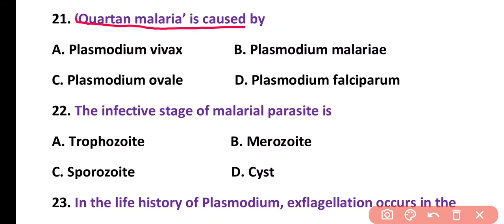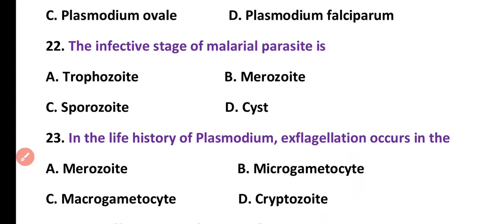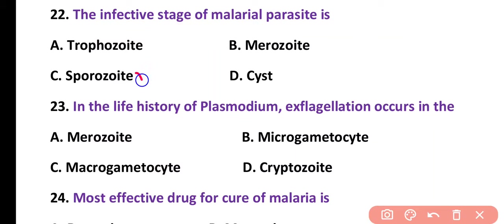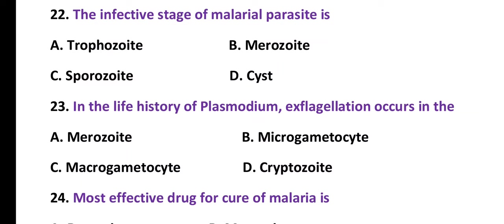Question number 21. Quartan malaria is caused by: Plasmodium vivax, Plasmodium malariae, Plasmodium ovale, or Plasmodium falciparum. Correct answer is option B. Plasmodium malariae causes the quartan type of malaria. Question number 22. The infective stage of the malarial parasite is: trophozoite, merozoite, sporozoite, or cyst stage. Correct answer is option C. The infective stage is the sporozoite, while the feeding stage is the trophozoite.